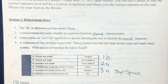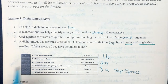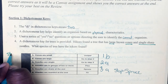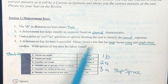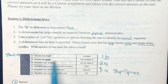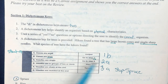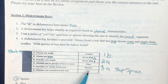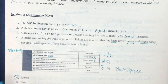The dichotomous key for the tree is provided below. A hiker found a tree that has large cones and single sharp needles. We always start at number one, which asks small or large cones — we choose large, so we go to 1B and then to number two. Number two asks if needles are single or in groups — this one is single, so we go to three. Number three offers spruce or fir; sharp or round ends — this one has sharp ends, so the answer is spruce. The correct answer is A.